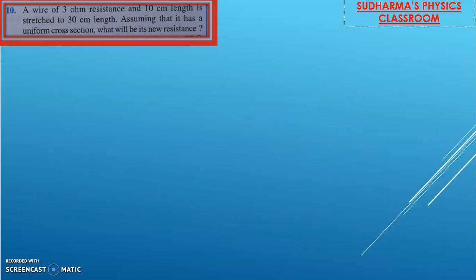Another type of question: a wire of 3 ohm resistance and 10 centimeter length is stretched to 30 centimeter length. Assuming that it has a uniform cross section, what will be its new resistance? We have resistance R = 3 ohms and the length is changing from 10 cm to 30 cm, but no other resistivity values or area are given.